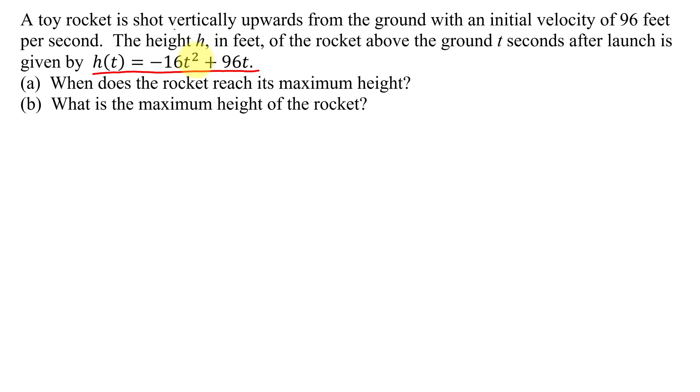And if I graph it, I will get a parabola. And as the coefficient of the t squared term is negative, it's going to be a parabola that opens down, something like this.